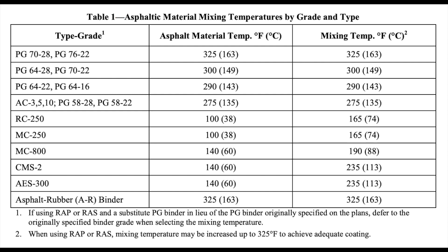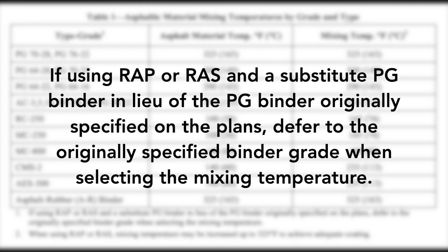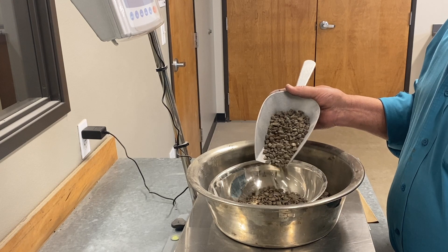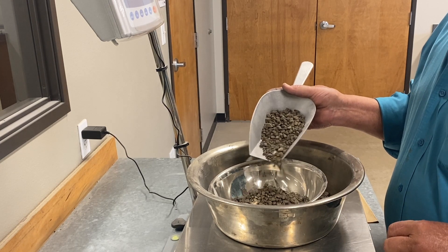Select the mixing temperature from Table 1 in the test procedure based on the asphalt binder specified on the plans. If using RAP or RAS and a substitute PG binder in lieu of the PG binder originally specified on the plans, defer to the originally specified binder grade when selecting the mixing temperature. When adding warm mix asphalt additives or using warm mix asphalt processes in the laboratory, select the mixing temperature based on the asphalt binder specified on the plans.